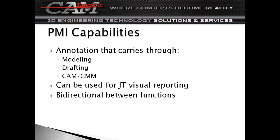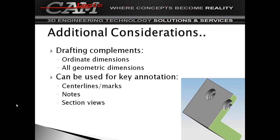And you can use it for JT visual reporting. So it's nice for that because you're going to use 3D views and possibly share that with a customer or supplier. It gives you good visibility of your dimensions right on that JT report. And it's bi-directional — so you can make the dimensions in drafting and then they update the model, or you do it in the model and it updates the draft. You just have to update the view in that drafting view. Some other benefits: drafting coordinates, coordinate and geometric dimensions, center marks, center lines, add notes, and section views.